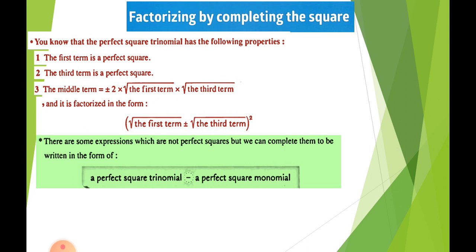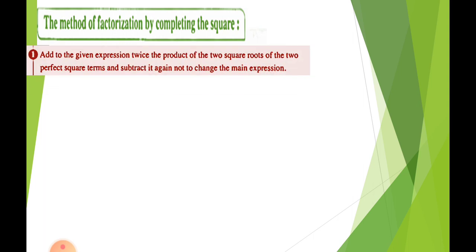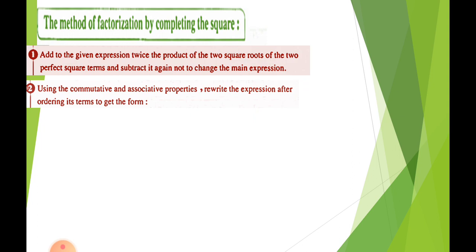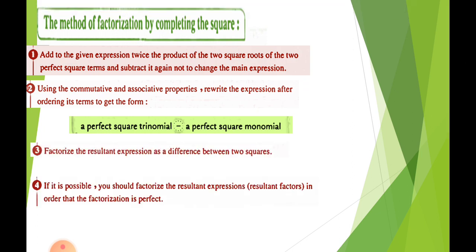Here we want to change the expressions to the form: perfect square minus perfect square. We add or subtract to change the form without changing the value. Specifically, we add and subtract two times the product of the square roots of the two perfect square terms. Then using the commutative and associative properties, we factorize the first expression as a perfect square trinomial minus a perfect square.